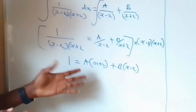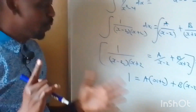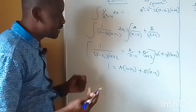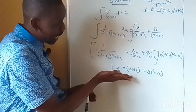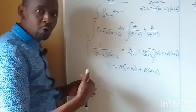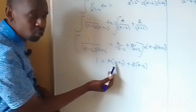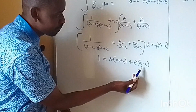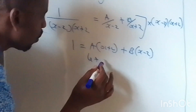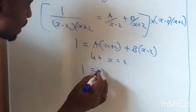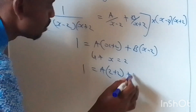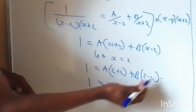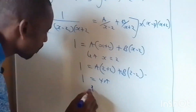Let x equal 2. Then 1 equals A(2 plus 2) plus B(2 minus 2), which gives 1 equals 4A plus 0. So A equals one quarter.